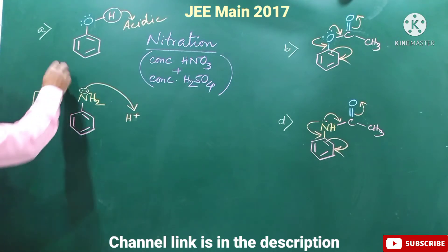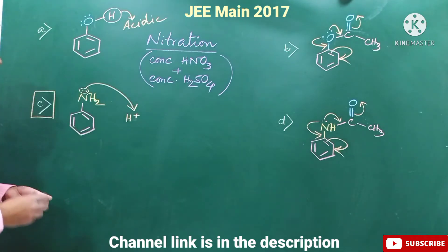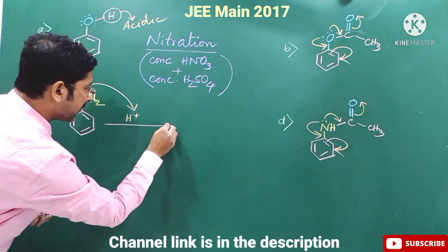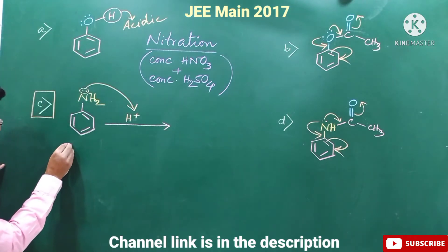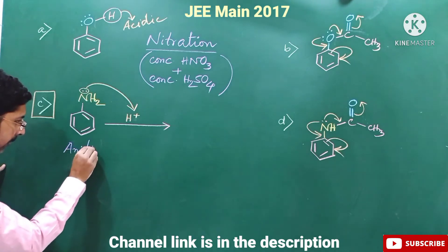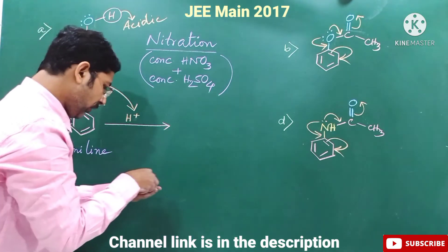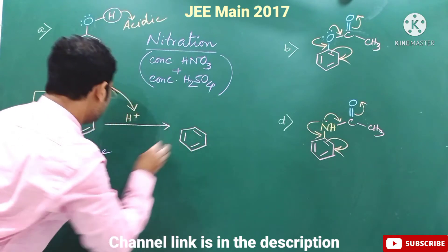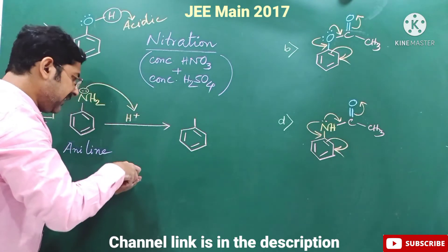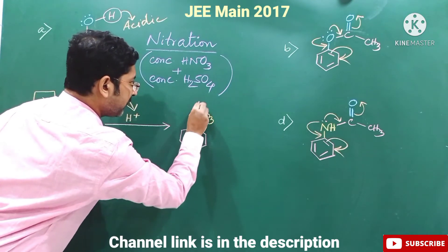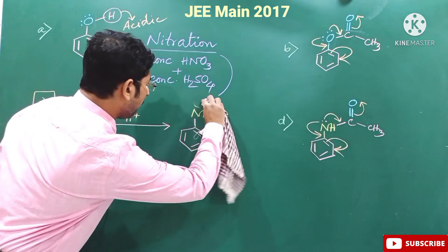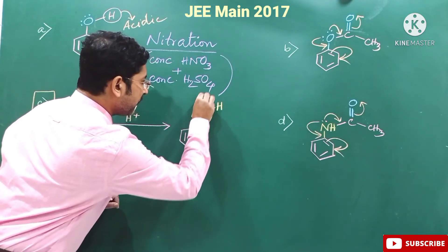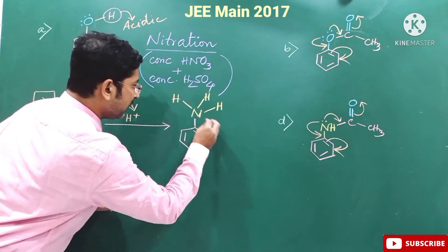Aniline is the most basic compound among the four. When this mixed acid mixture is given, the basic amine group gets protonated. This aniline molecule gets protonated and forms the anilinium cation — NH₃⁺. This nitrogen atom contains three hydrogen atoms, so this is our NH₃⁺, which is positively charged.